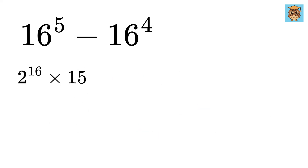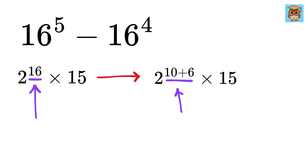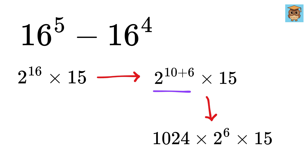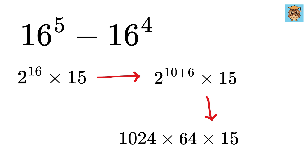Now, this 16 can be written as 10 plus 6, so this will be 2 raised to 10 times 2 to the 6. Now, 2 to the 10th power is 1024, and 2 to the power 6 is 64, and this times 15.